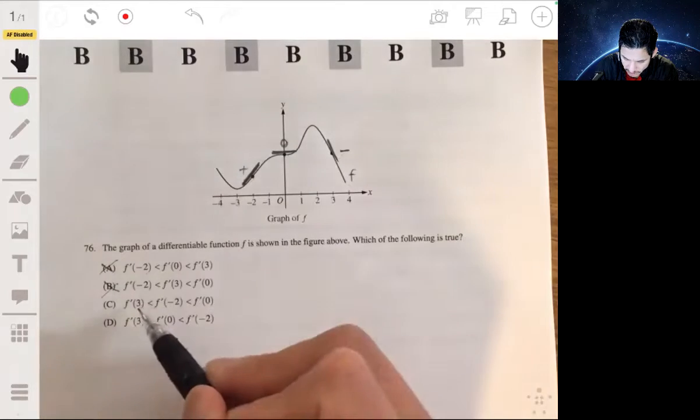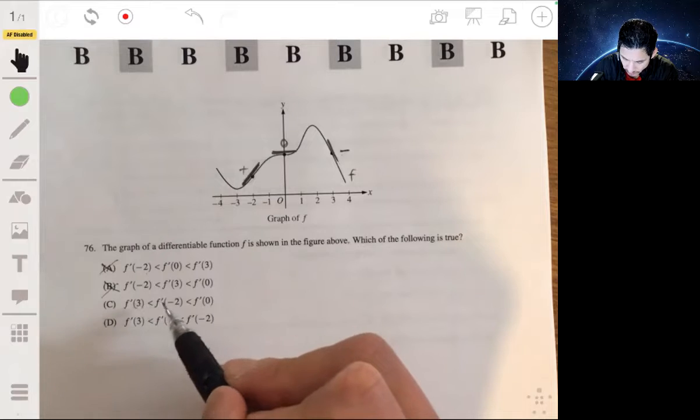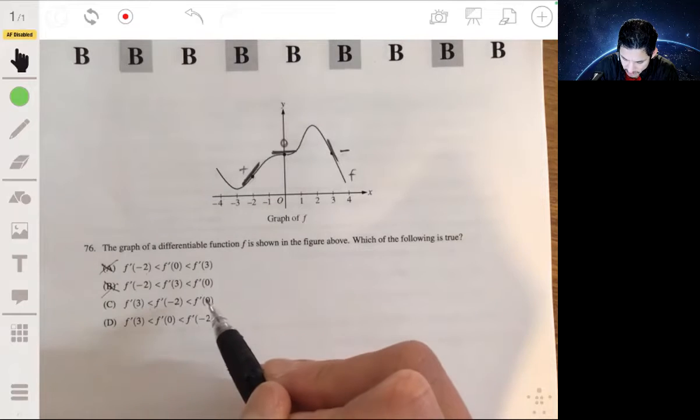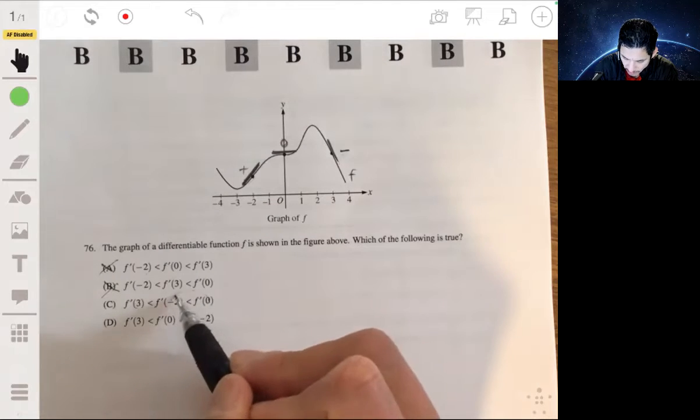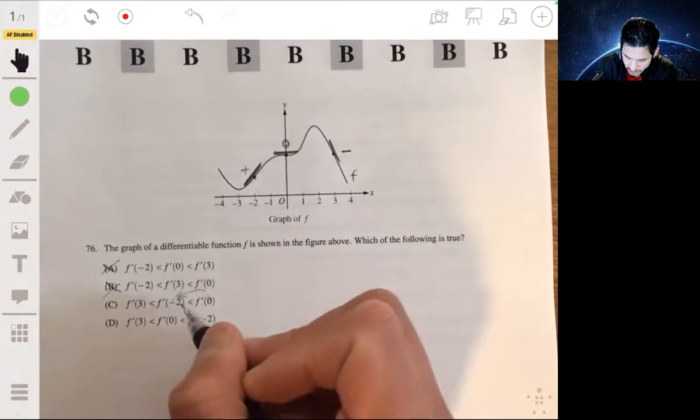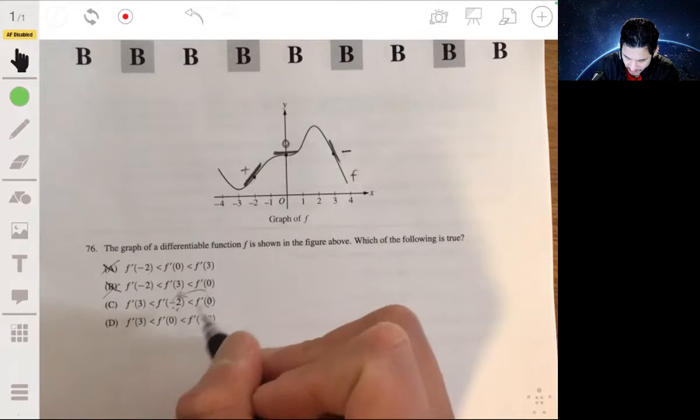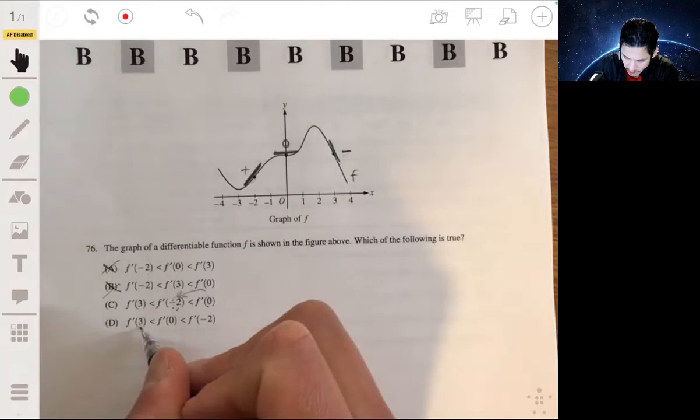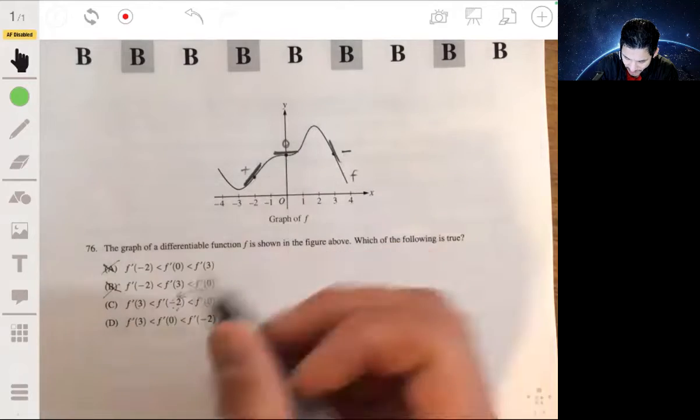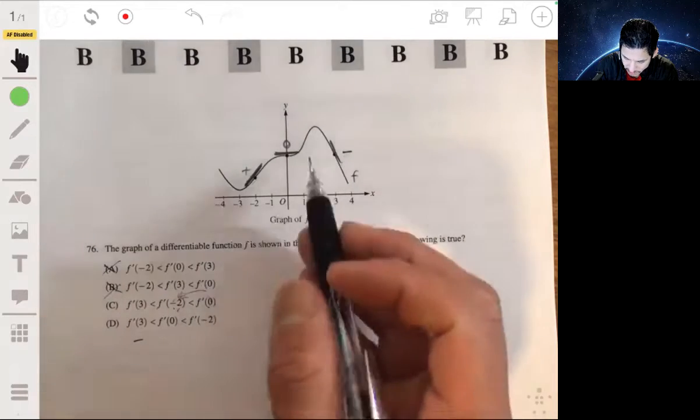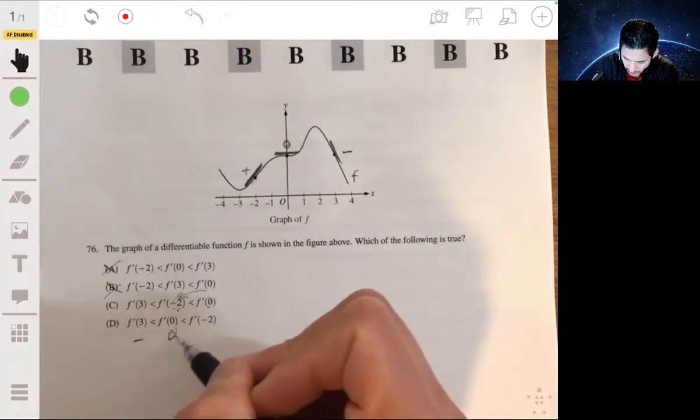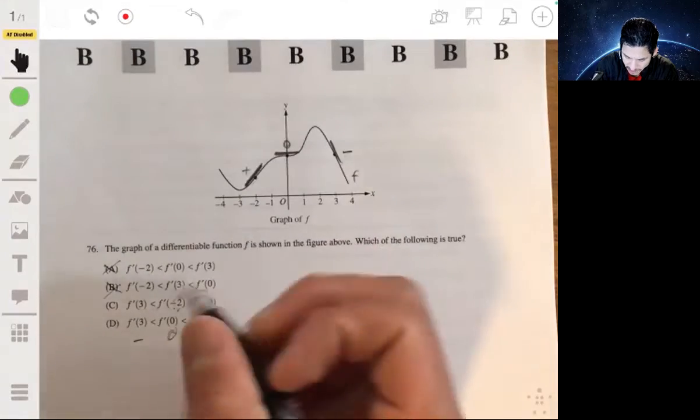But f prime of zero, or f prime of negative two, let's see. This one has to be positive, positive, positive, negative positive, zero. So these may be swapped. Remember this is positive and that's zero. So f prime of three is negative, f prime of zero is zero, and f prime of negative two is positive. Okay, so the answer would be D.